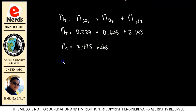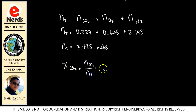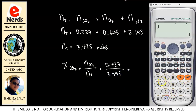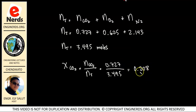We can now determine the mole fraction of each component, starting with the mole fraction of CO2 — which is the number of moles of CO2 over N_total. So 0.727 moles divided by 3.495 gives us 0.208. The units are dimensionless because moles cancel in numerator and denominator.